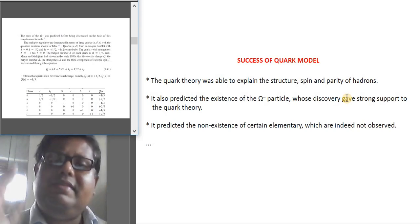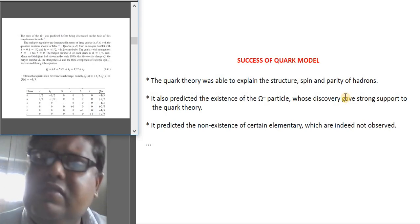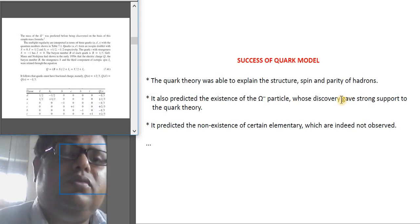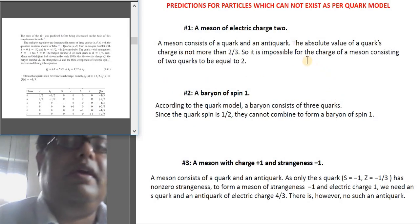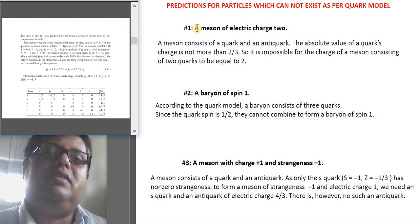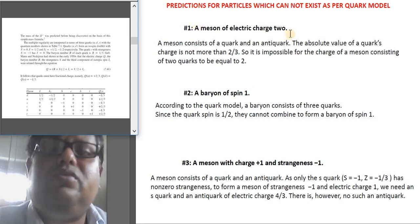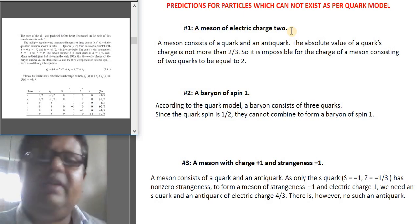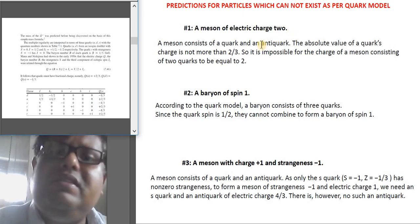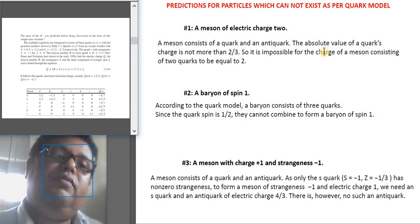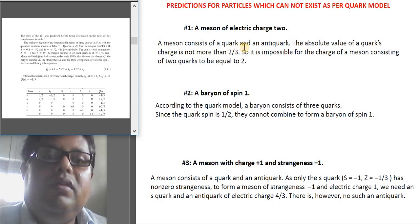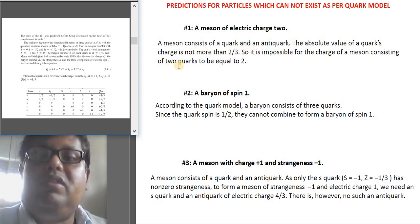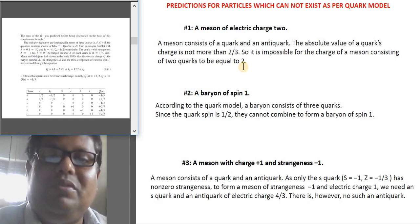The next support is the prediction of non-existence of certain elementary particles which are indeed not observed. Let's get an example: Do we see a meson of electric charge two? A meson consists of a quark and an antiquark. Now, the absolute value of a quark's charge is not more than 2/3, so it's just not possible for the charge of a meson consisting of two quarks to be equal to 2.